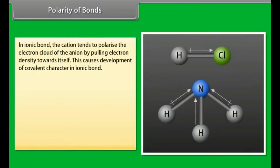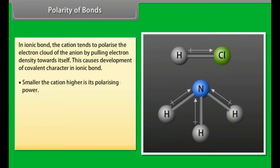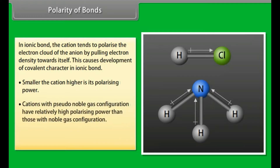Polarity of bonds. In ionic bond, the cation tends to polarize the electron cloud of the anion by pulling electron density towards itself. This causes development of covalent character in the ionic bond. Smaller the cation, higher is its polarizing power. Cations with pseudo-noble gas configuration have relatively high polarizing power than those with noble gas configuration. Larger the size of the anion, higher is its polarizability.